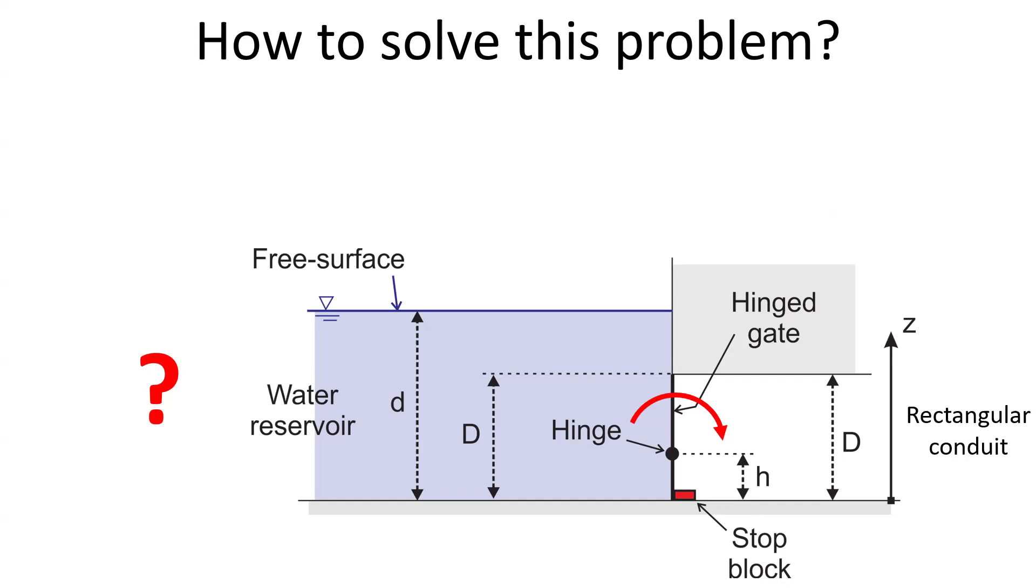We introduce as notations the depth of the water reservoir, small d, the internal height of the conduit, big D, and the height of the hinge above the bottom of the conduit, small h.